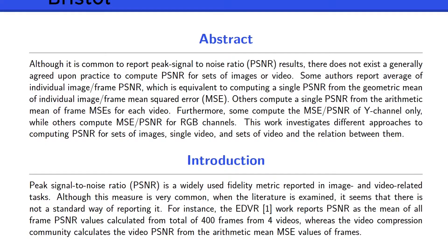In this work, we will look at the very popular PSNR metric for image and video-related tasks. Although it is very common to report PSNR results, there doesn't exist a generally agreed method to compute it. Furthermore, different works compute PSNR values in different domains such as RGB space or luminance channel, and some of them do not specify in which domain they calculated it, which makes it hard to compare with future results fairly.